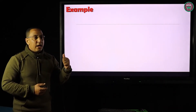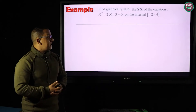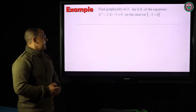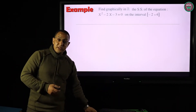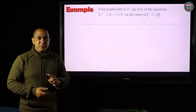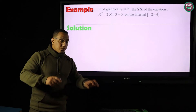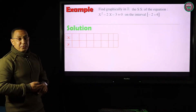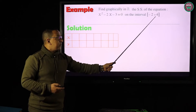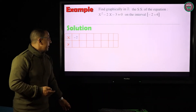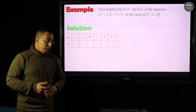We are going to learn how to solve the equation graphically. For example: find graphically in ℝ the solution set of the equation x² − 2x − 3 = 0 on the interval [−2, 4]. We started in the first term with how to represent the second-degree function graphically using a given interval. First, I'm going to draw a table with columns for x and f(x). I'm going to represent the values of this interval from negative two to four: −2, −1, 0, 1, 2, 3, and 4.